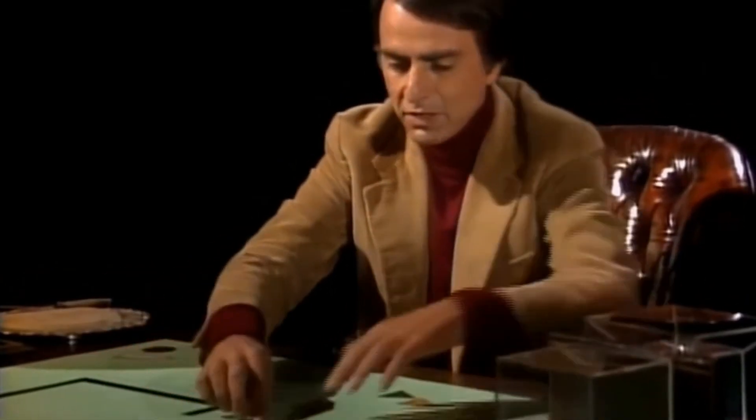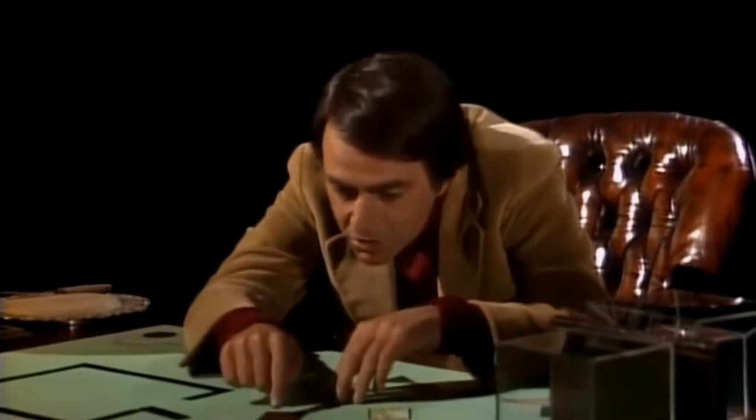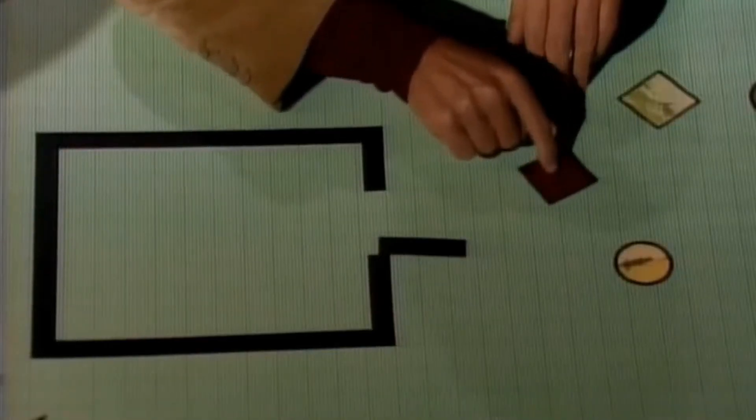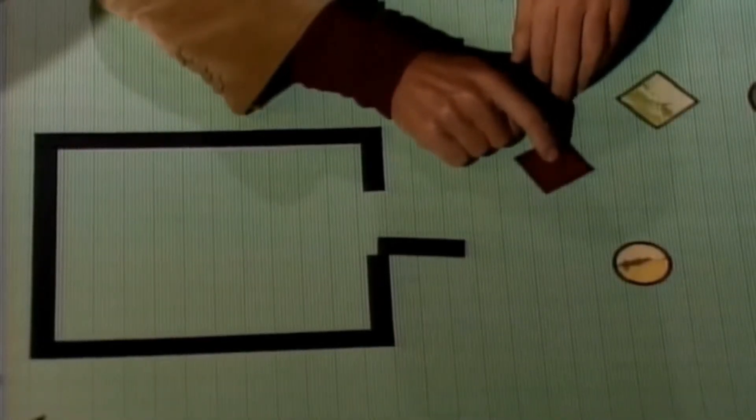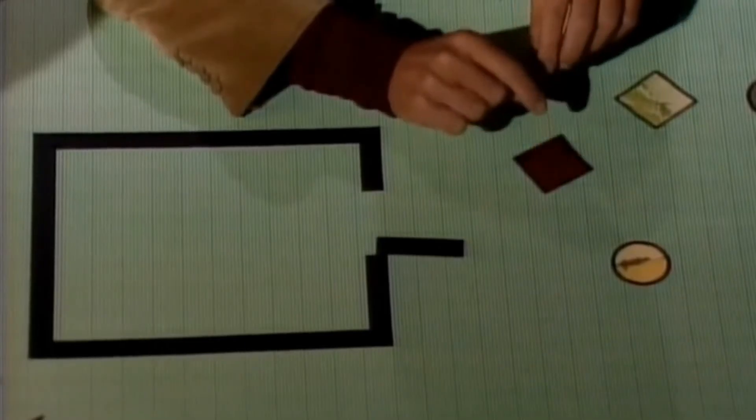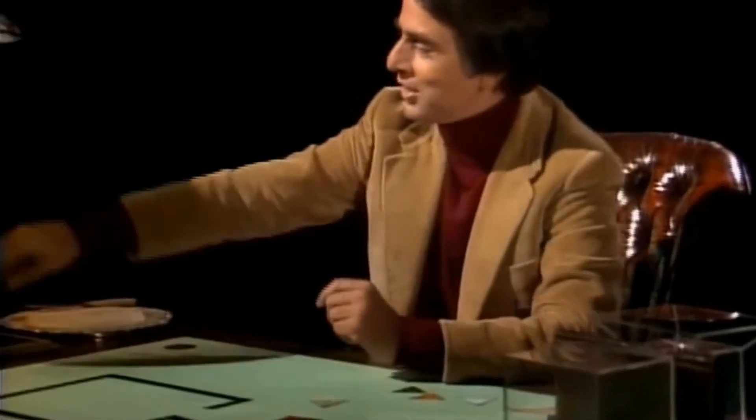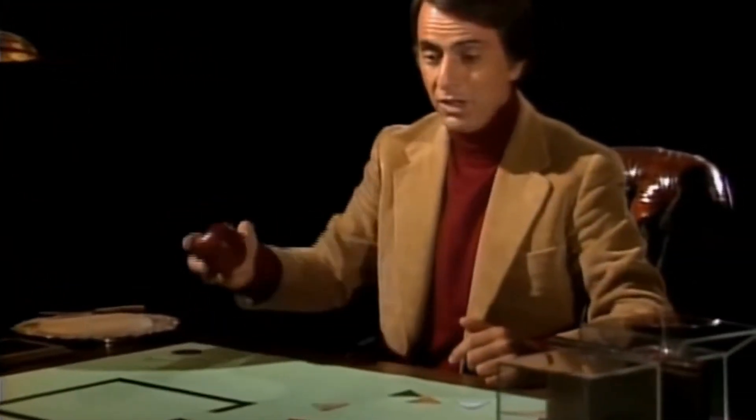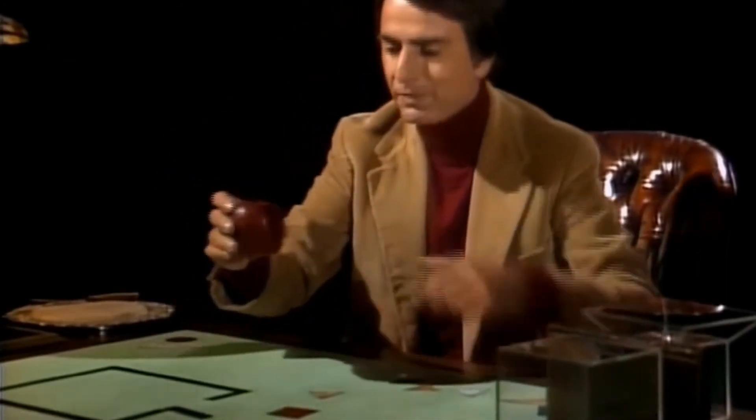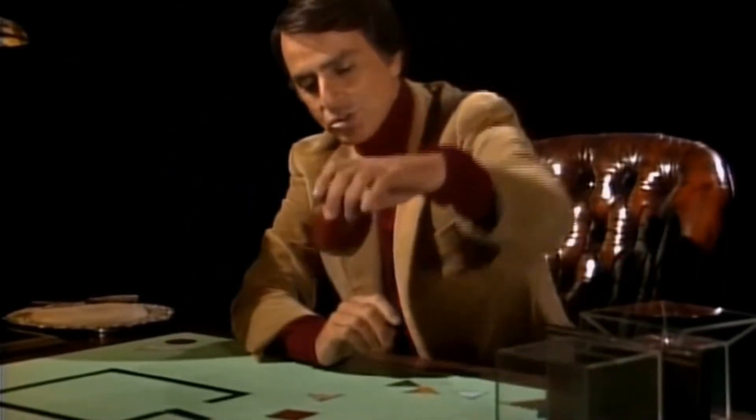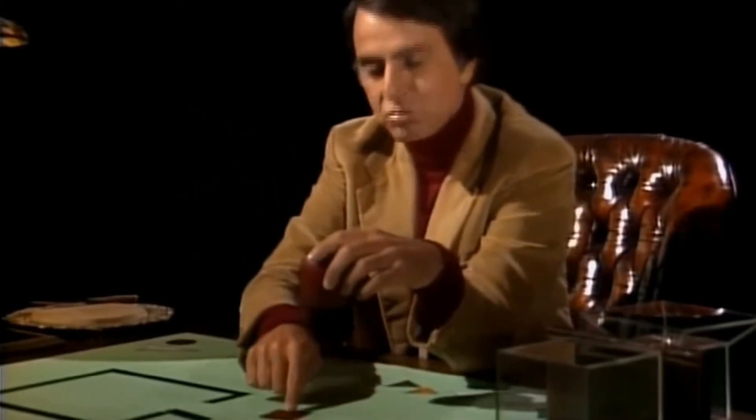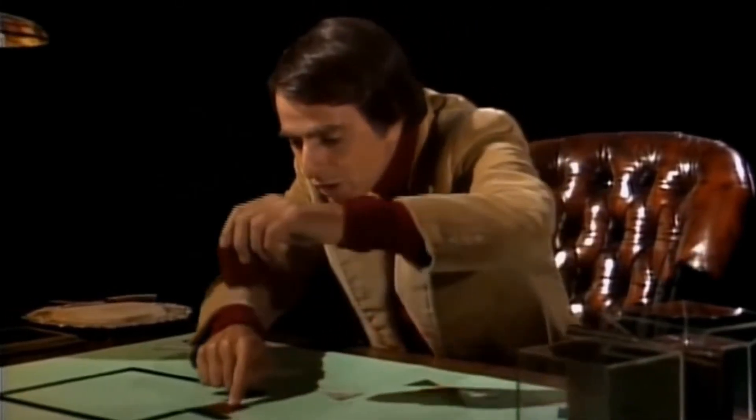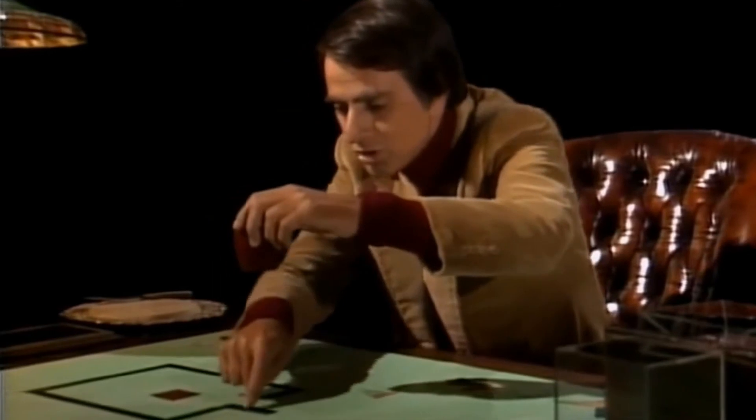Now, let us imagine that into flatland, hovering above it, comes a strange three-dimensional creature, which, oddly enough, looks like an apple. The three-dimensional creature sees an attractive, congenial-looking square, watches it enter its house, and decides, in a gesture of interdimensional amity, to say hello.